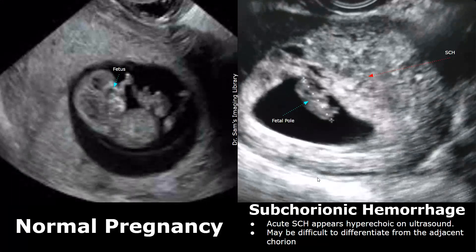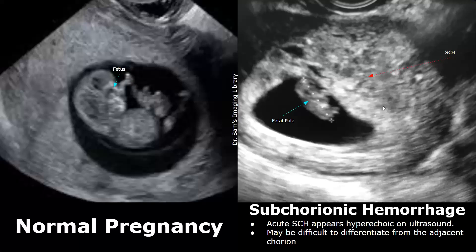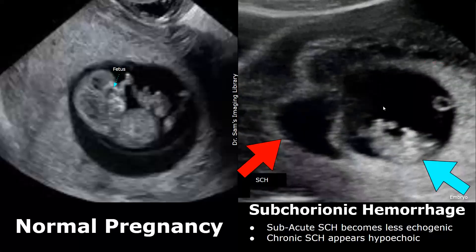An acute subchorionic hemorrhage, or SCH, appears hyperechoic and heterogeneous because of fresh clotted blood. Clotted blood appears hyperechoic. It can be difficult to locate this hematoma when it is at an acute stage. Over time, the echogenicity of the hematoma starts to decrease. A subacute SCH becomes less echogenic. A chronic hematoma will appear hypoechoic due to liquefaction and resorption of the hemorrhage.